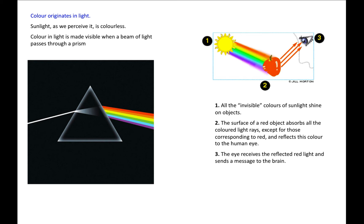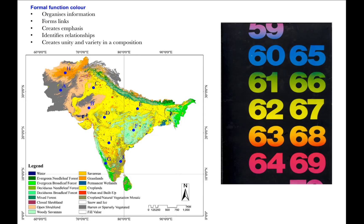How do we see color? All the invisible colors of sunlight shine on objects. The surface of a red object absorbs all the colored light rays except for those corresponding to red, and reflects this color to the human eye. The eye receives the reflected red light and sends a message to the brain. The formal function of color organizes information, forms links, creates emphasis, identifies relationships, and creates unity and variety in the composition.